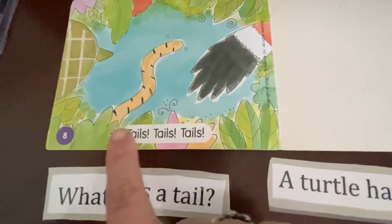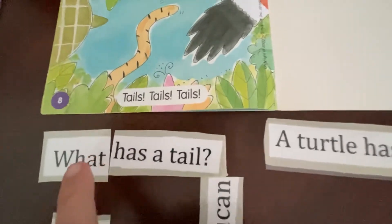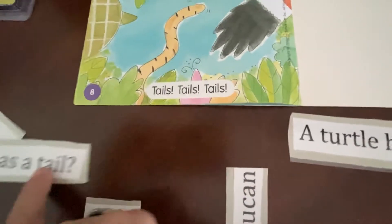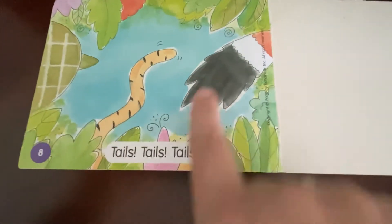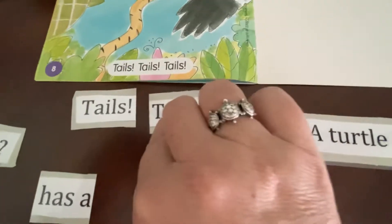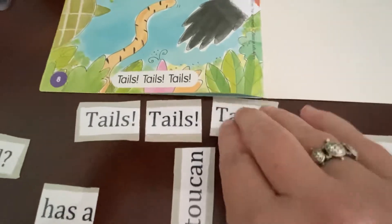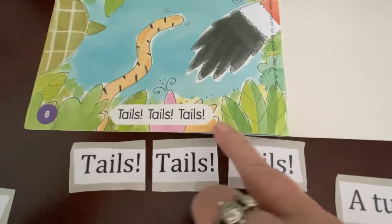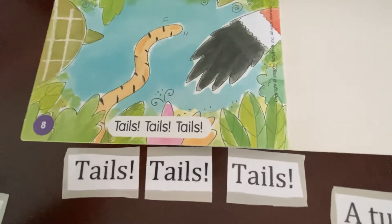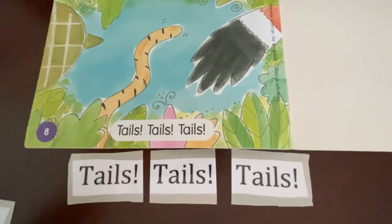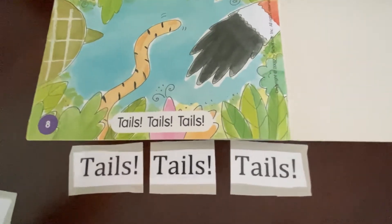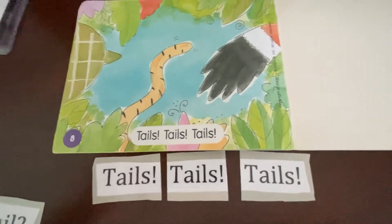And then the last page just says tails, tails, tails. There were three animals in the stories, so tails, tails, tails — and that matches up. We're going to come over here and match tails, tails, tails. And we want to make sure that we're helping the kids with what is this thing at the end with that long line and the dot. That one is an exclamation mark. You can let them know that means you're shouting or excited — either one is a good answer for that.